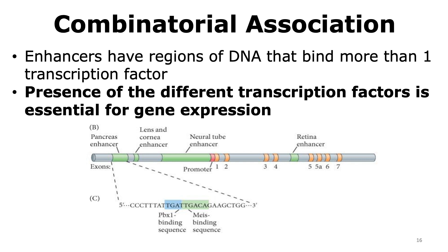Enhancers have regions of DNA that can bind to more than one transcription factor, and the presence of different transcription factors is essential for gene expression — this is called combinatorial association. For example, the PAX6 pancreas enhancer has binding sites for two different proteins: PBX1 and MACE. We need both PBX1 and MACE to bind to the pancreas enhancer for gene expression to occur. Only when these two transcription factors are present together does PAX6 get expressed in the pancreas.